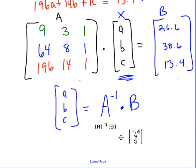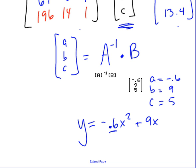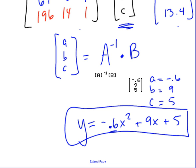So you can see that A is negative 0.6, B is 9, and C is 5. So when we write the equation, we have negative 0.6x squared plus 9x plus 5. We were thinking that A value should be negative, so that is good that that showed up negative. And there is the equation to our quadratic.